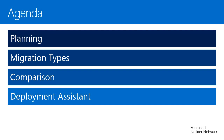Let me show you the agenda. I will start with planning in general, then walk through the various migration types available for mailbox migration. After covering the capabilities of these migration types, I will do a comparison between them. And last but not least, I will demonstrate how to use the Deployment Assistant.